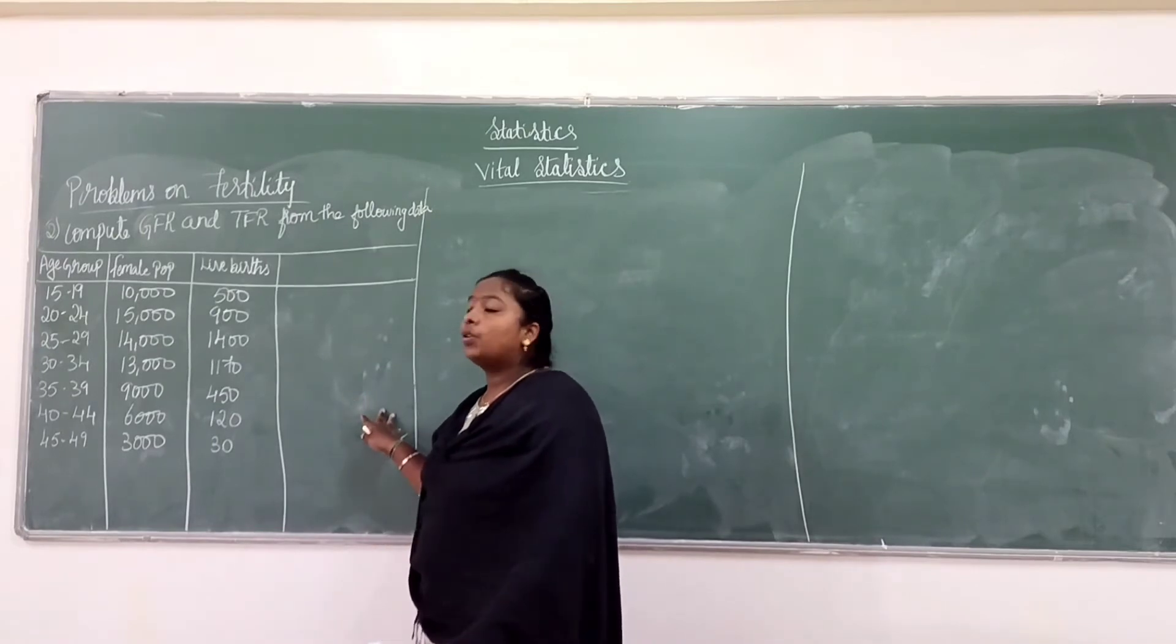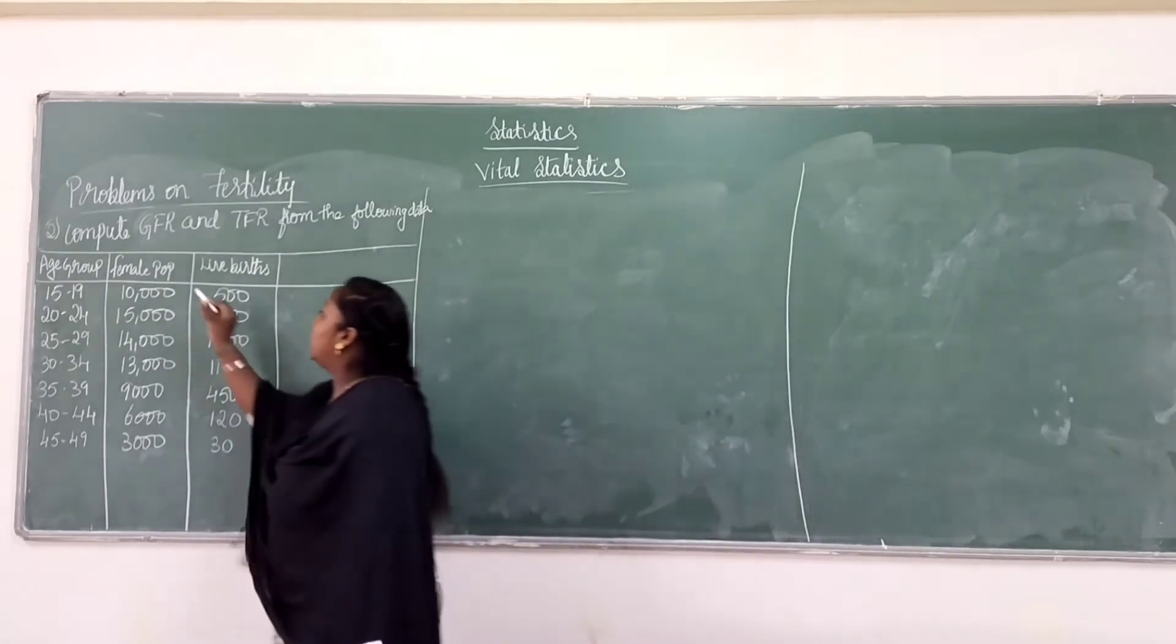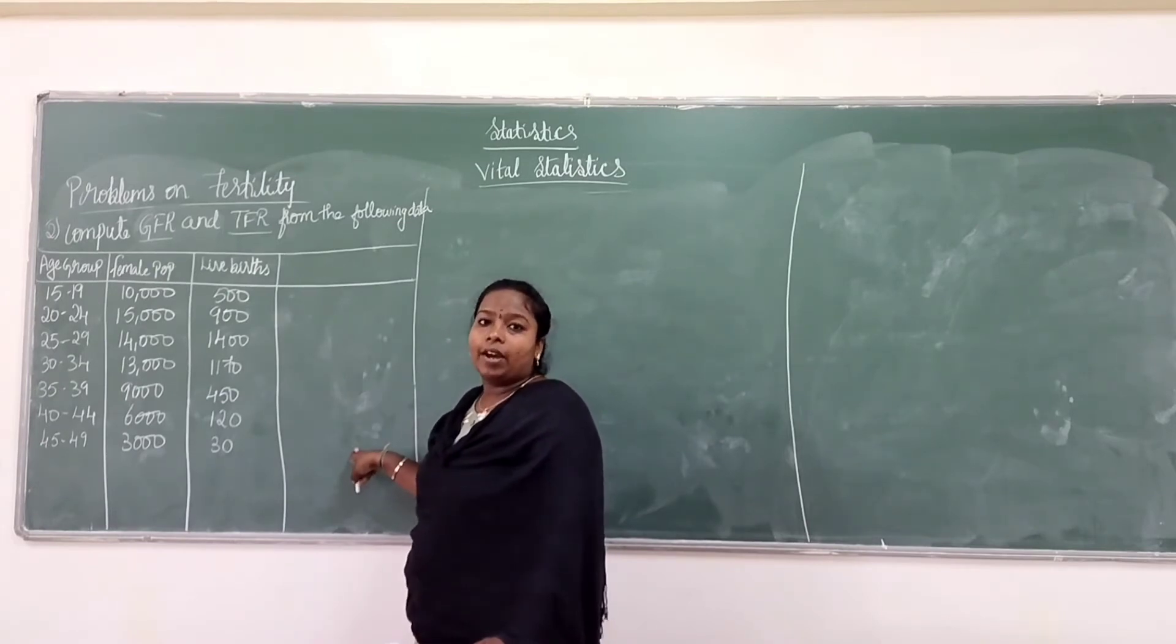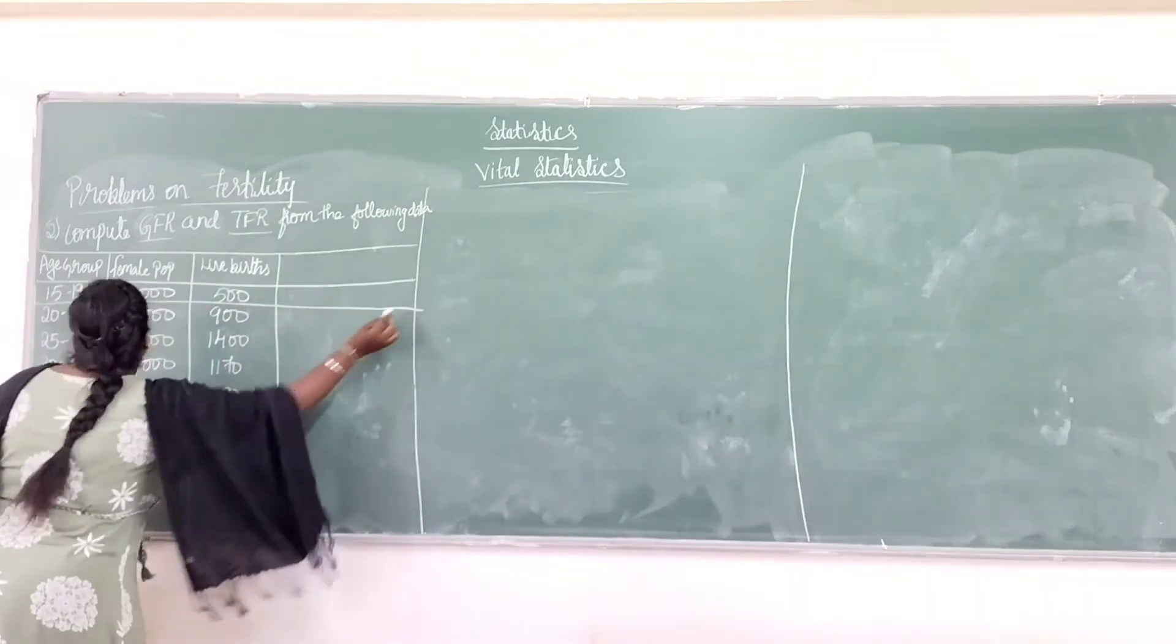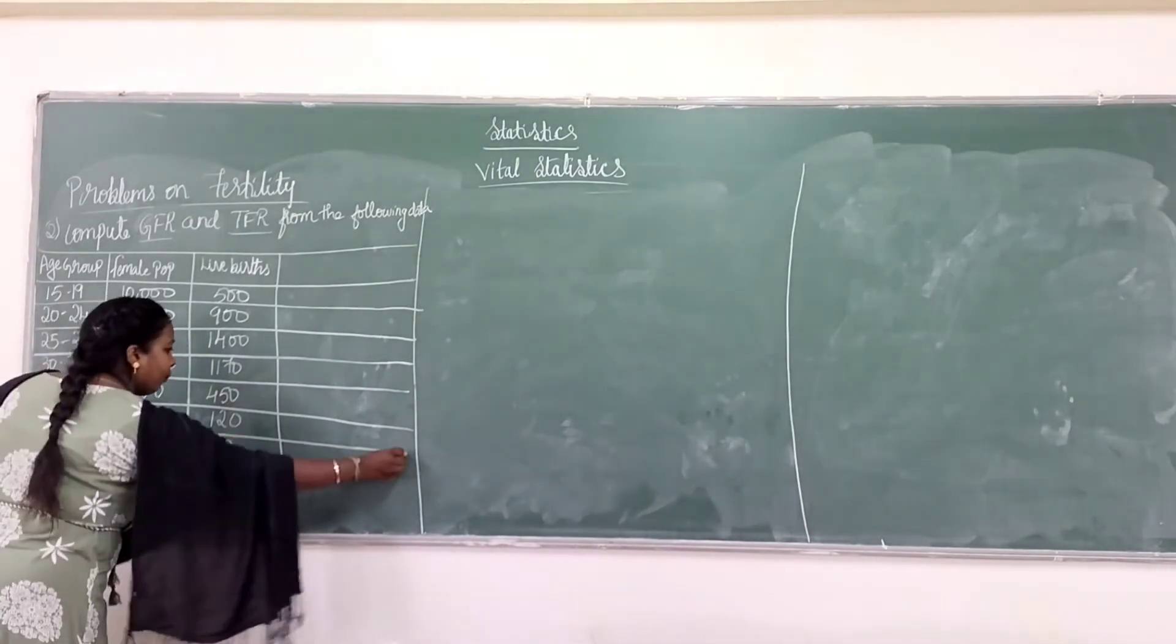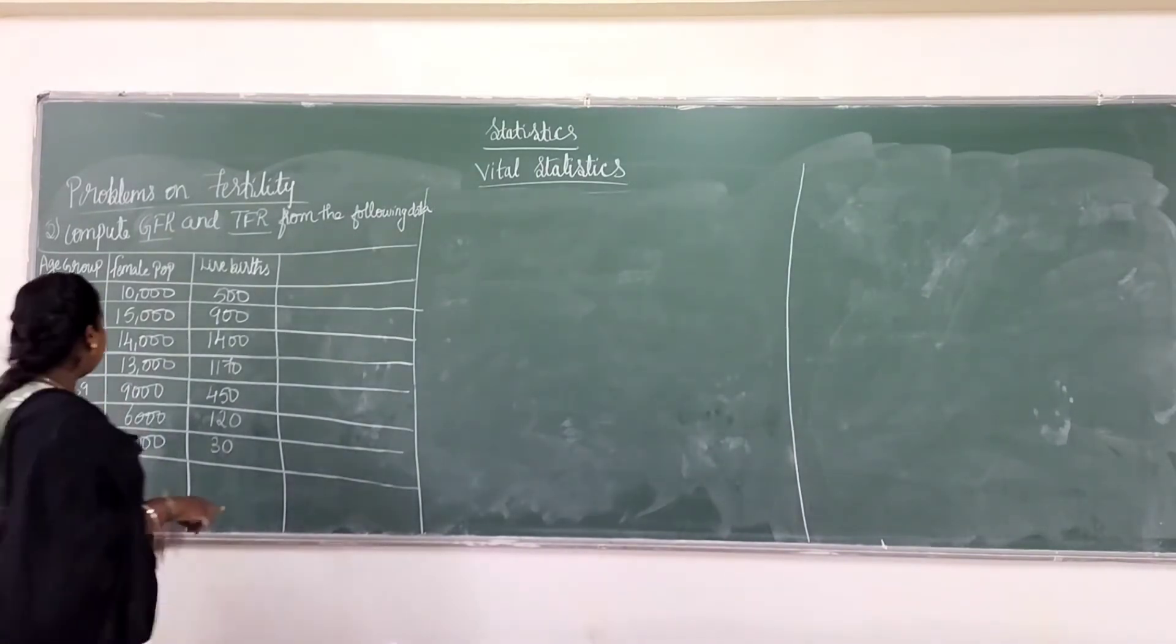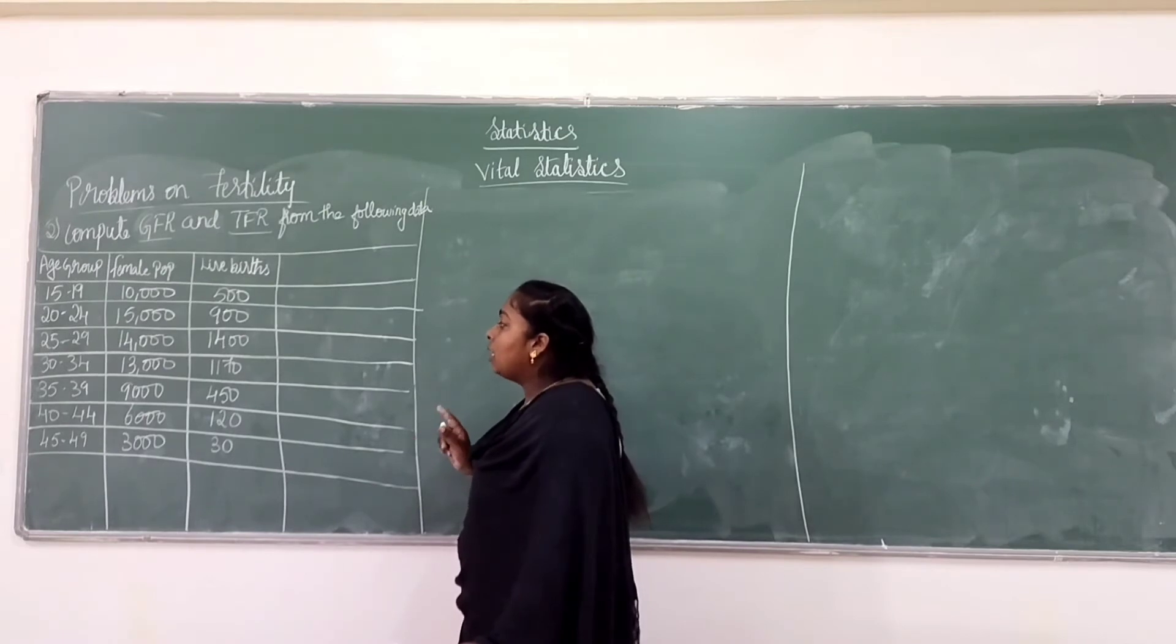Problem number 2 on this topic. Compute GFR and TFR from the following data. They are asking to find out general fertility rate and total fertility rate. I'm taking the question here. Age group is 15 to 19, 20 to 24, 25 to 29, 30 to 34, 35 to 39, 40 to 44, 45 to 49. Female population is 10,000, 15,000, 14,000, 13,000, 9,000, 6,000, and 3,000. Live births are 500, 900, 1400, 1170, 450, 120, and 30.